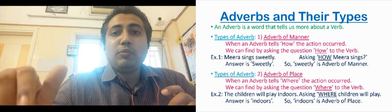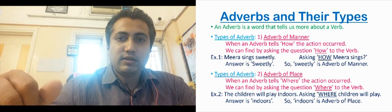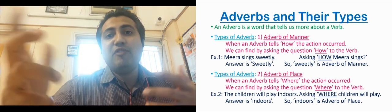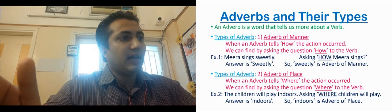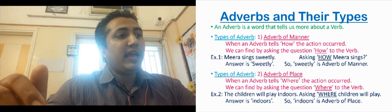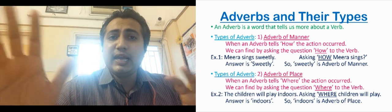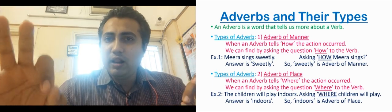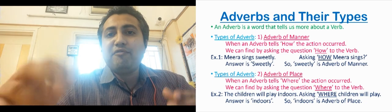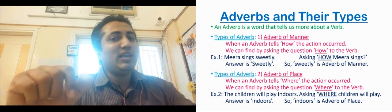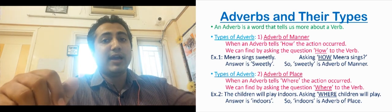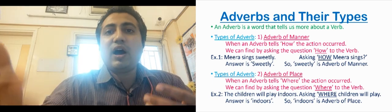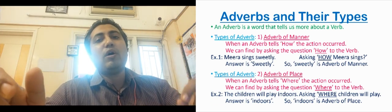Now let us go to adverb of place. Adverb of place tells us where the action was done. To get the adverb of place, we have to ask the question where to the verb. Example: The children will play indoors. What is the action? Will play. Children will play where? Indoors. So we are getting the answer for where — where is the action done? That is adverb of place.